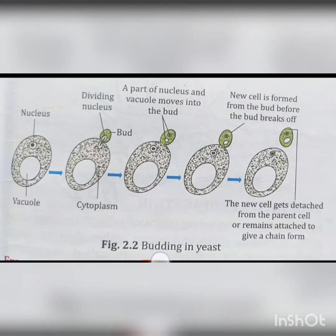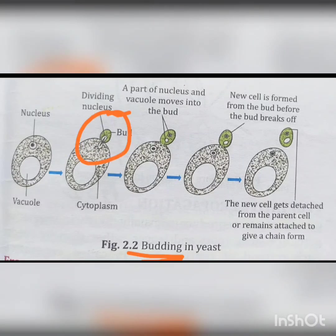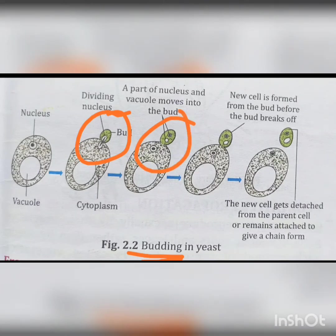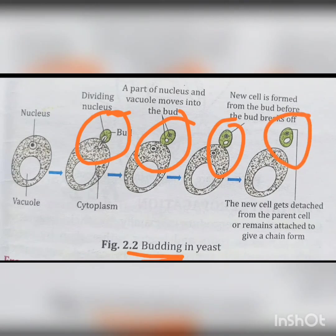The next type of asexual reproduction is budding. In budding, an outgrowth called a bud arises from the surface of the parent body. The bud grows bigger with the accumulation of cytoplasm, and the nucleus also divides and passes on to each end. The bud ultimately gets cut off from the parent body and leads an individual life. The budding may be repeated, resulting in one or more chains. For example, yeast.